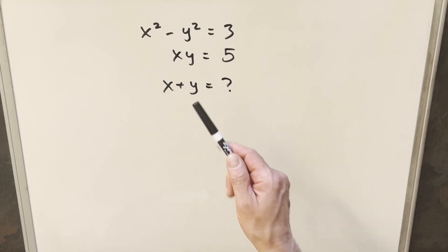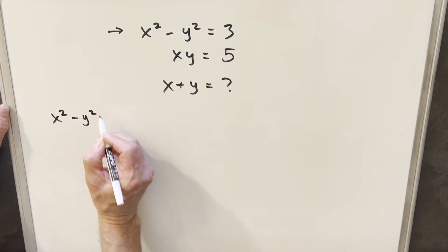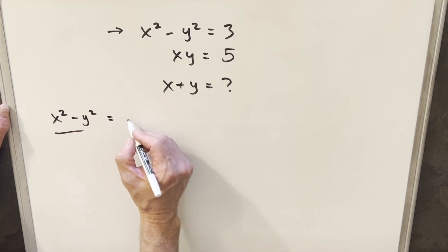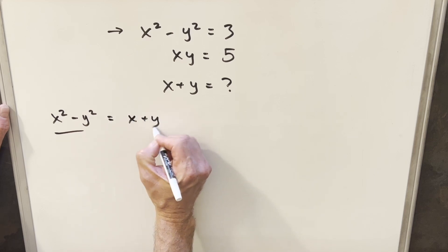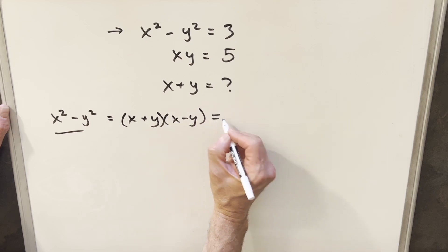Notice we're not asked to solve for x and y individually, we just need this x plus y value. So what I'm going to do to start is focus on this first equation. I'm going to take this and use the fact that this is just a difference of two squares. So I can take this and write this as x plus y times x minus y equals 3.